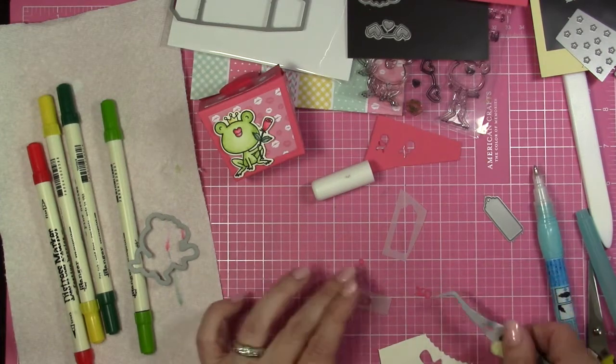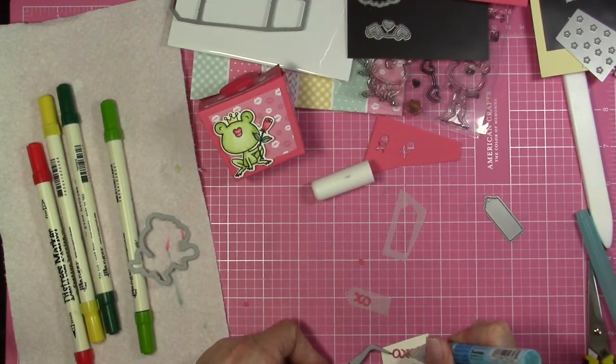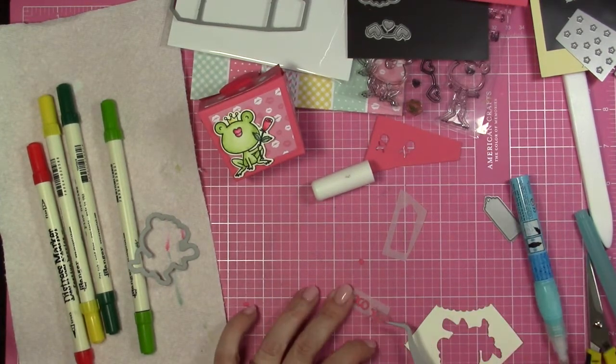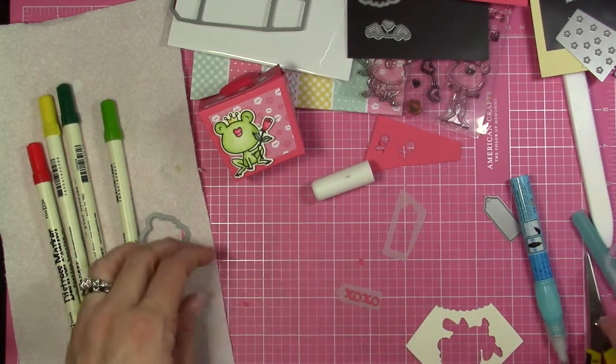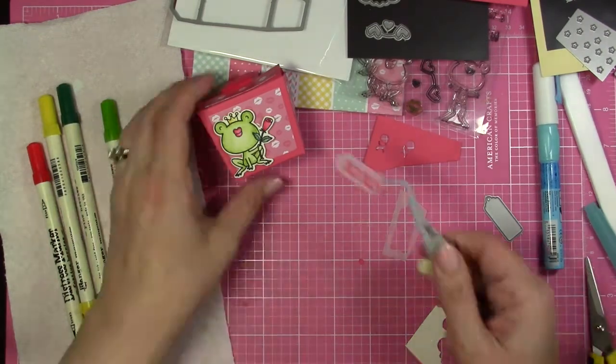And then once I have the tag on there, I'm going to use a white gumdrop and I'm going to attach that to the top of the tag. And then I'm going to add a little bit of Ranger Multimedia Matte to the back of the gumdrop.